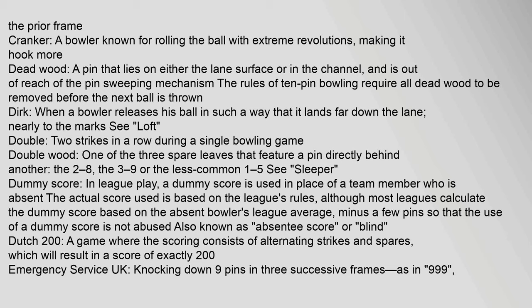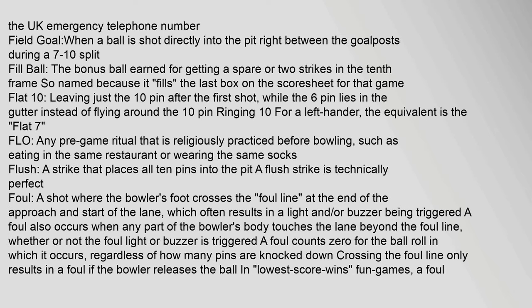Double wood: one of three spare leaves that feature a pin directly behind another — the 2-8, the 3-9, or the less common 1-5. Dummy score: in league play, a dummy score is used in place of a team member who is absent. Most leagues calculate it based on the absent bowler's league average minus a few pins, so the use of a dummy score is not abused; also known as absentee score or blind. Dutch 200: a game where the scoring consists of alternating strikes and spares, resulting in a score of exactly 200. Emergency service (UK): knocking down nine pins in three successive frames — as in 9-9-9, the UK emergency telephone number.